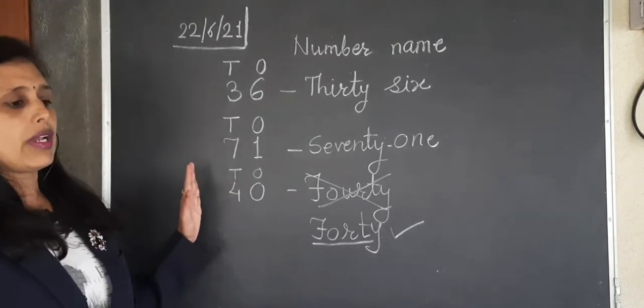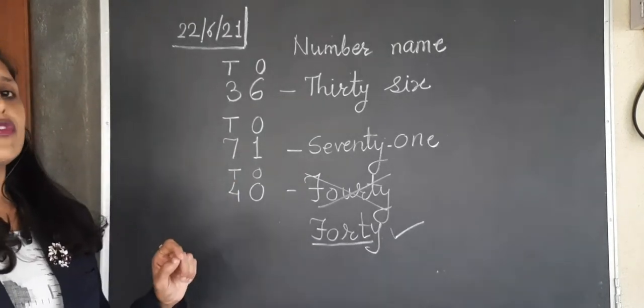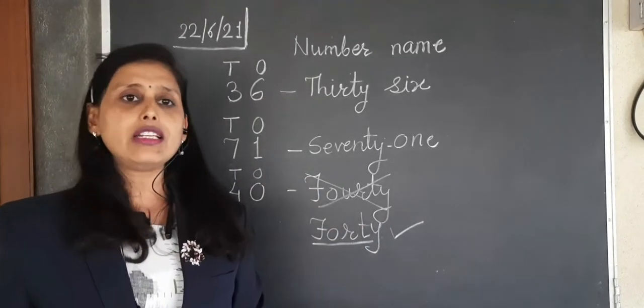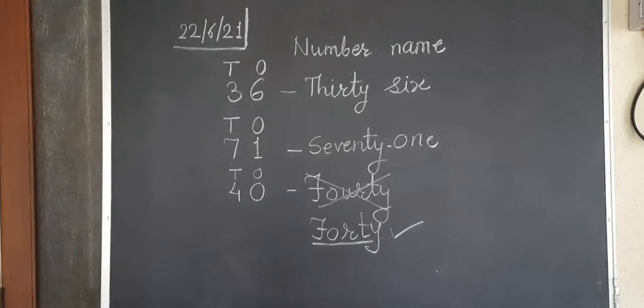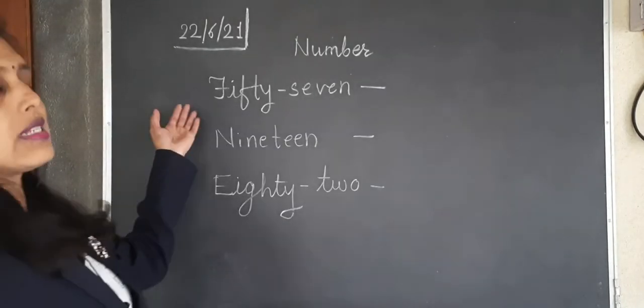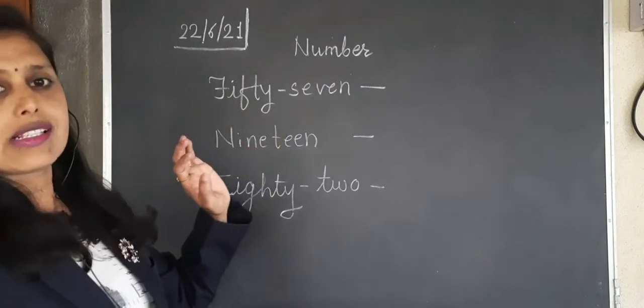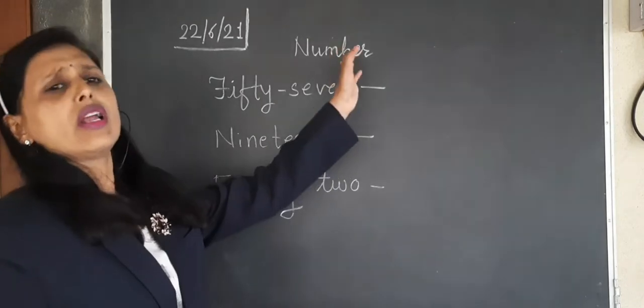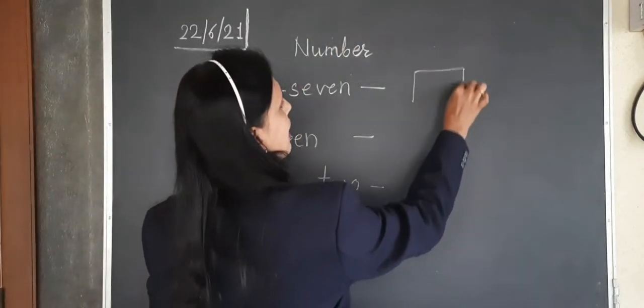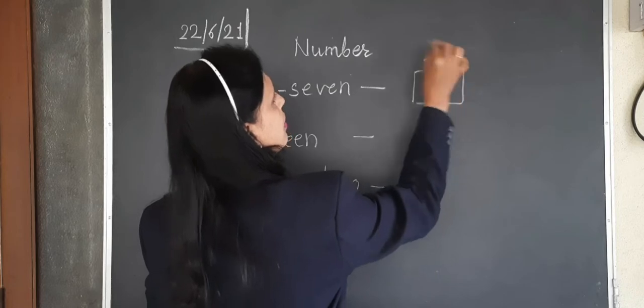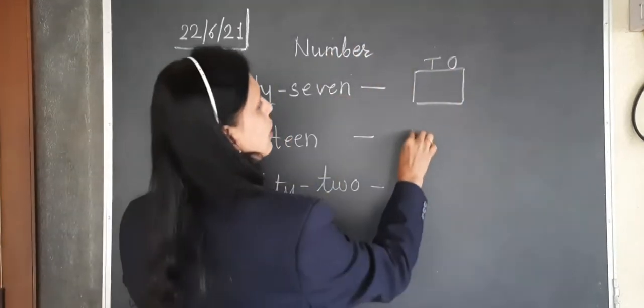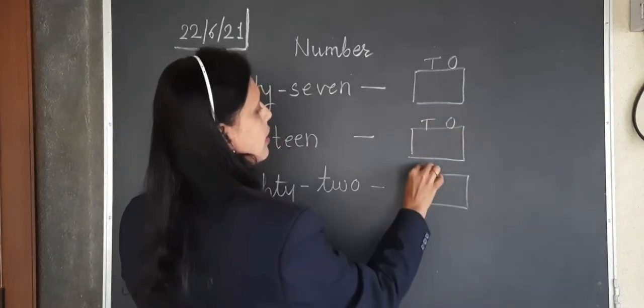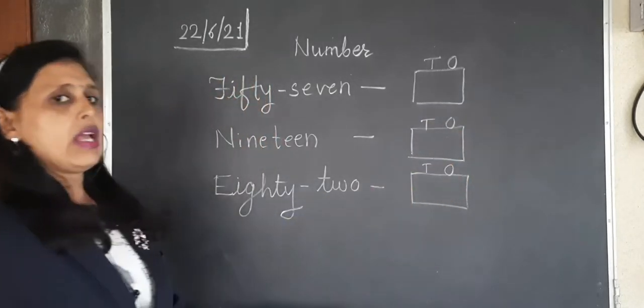So you have understood how to write the number name. Now we will start with numbers. I will give the number name and we have to write the numbers. I have written some number names, we will see how to write. Whenever you are writing the number, you have to write T and O upside the box. This will make it easy for you to write the number properly.